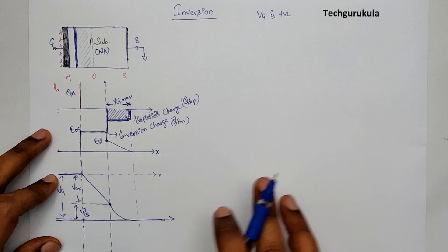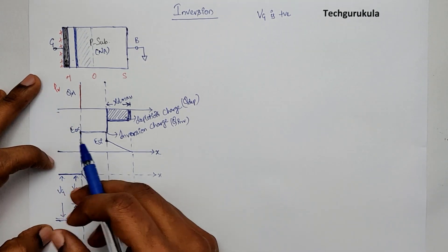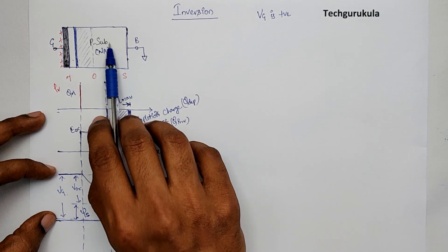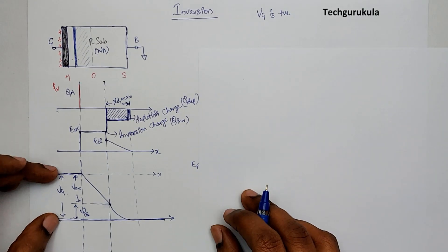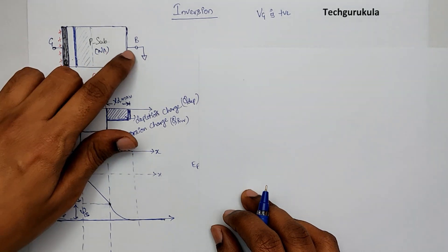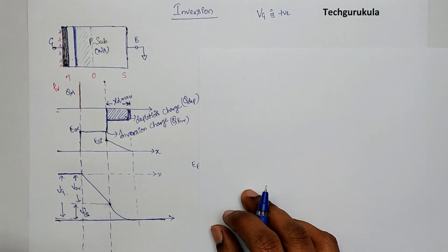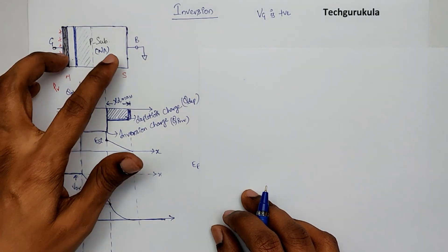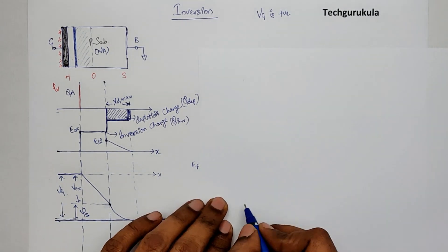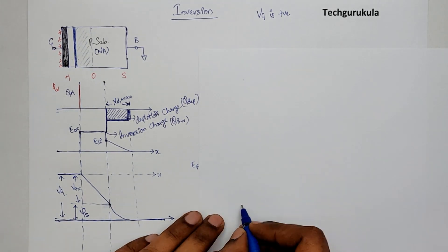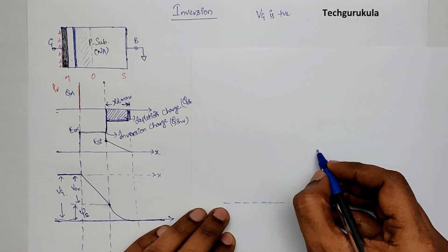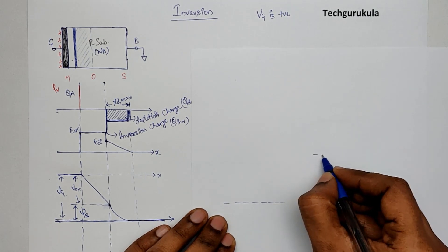We can now draw the energy band diagram. Q times Vg should equal the difference between the Fermi energy levels of the gate and the semiconductor. Since the gate potential is higher than the bulk, the Fermi energy level of the metal should be lower than the Fermi energy level of the bulk — because potential is defined for positive charge, but energy band diagrams are drawn for electron energy, which is the reverse. Hence, the Fermi energy level of the gate is placed lower, and the Fermi energy level of the semiconductor is on the higher side.